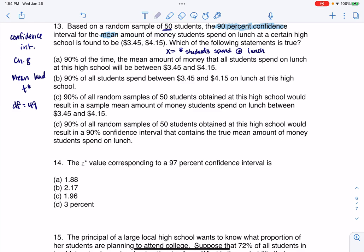Option A says 90% of the time, the mean amount of money that all students spend on lunch at this high school will be between $3.45 and $4.15. I'm going to say no on this one. The problem is that we don't know that each confidence interval you create would be exactly $3.45 to $4.15. If I took a different random sample of 50 students, maybe my CI might be something more like $3.52 to $4.23 or something like that.